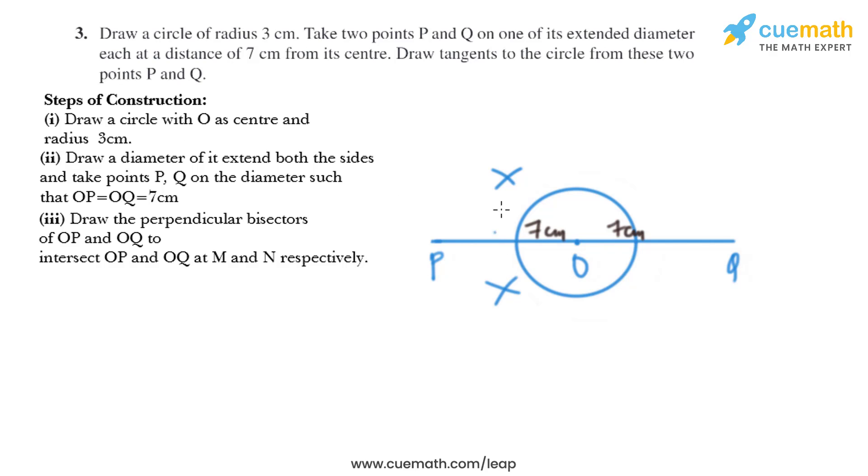And the same thing we have to do with OQ. After that, we need to join the points of intersection, and we'll name them as M and N.